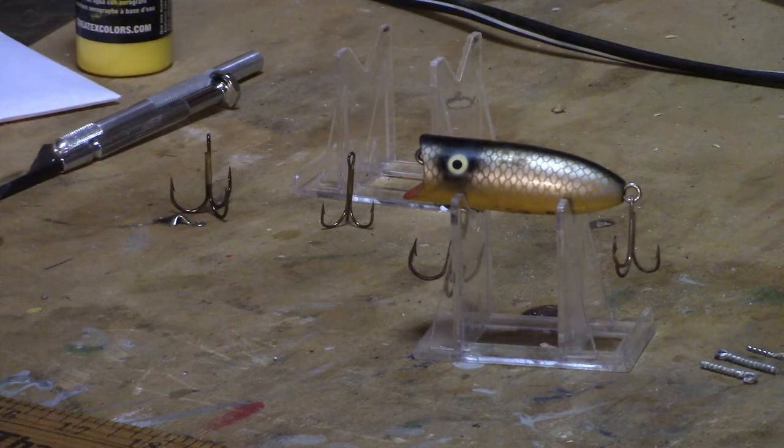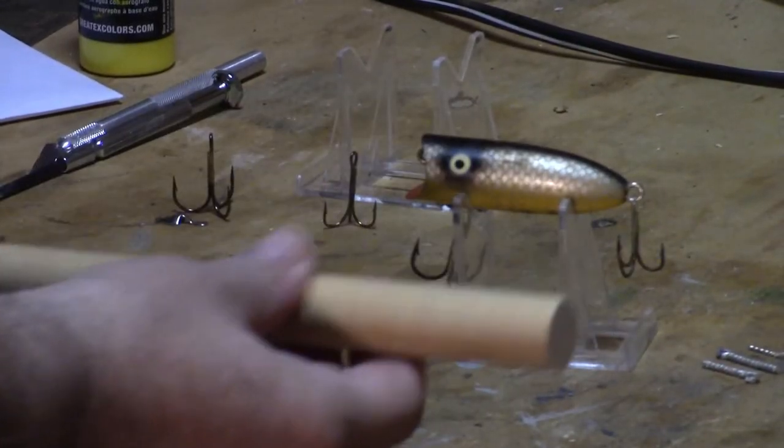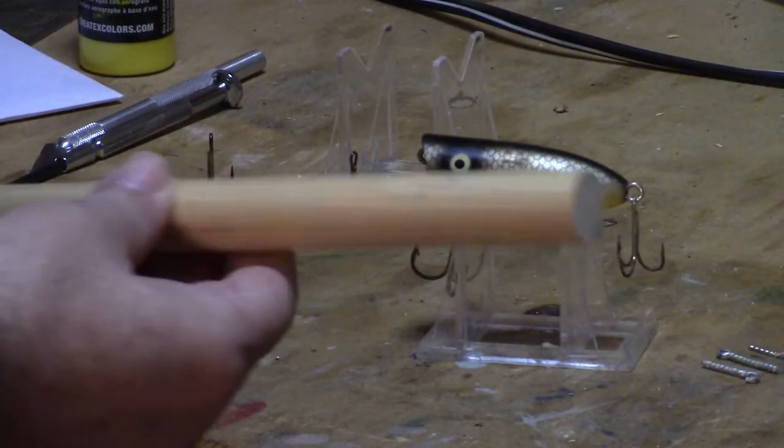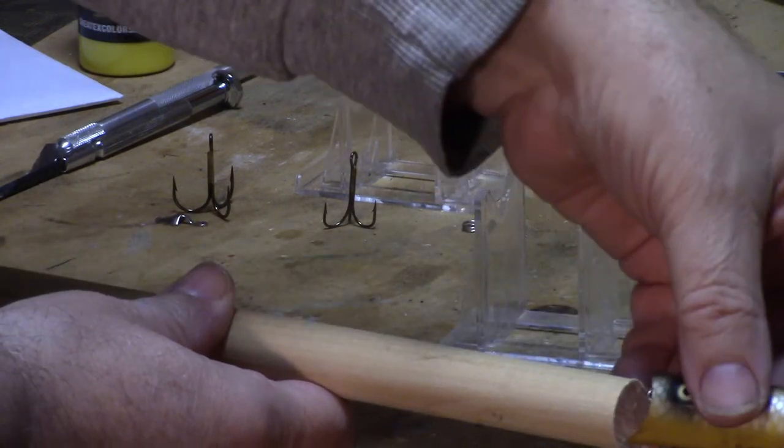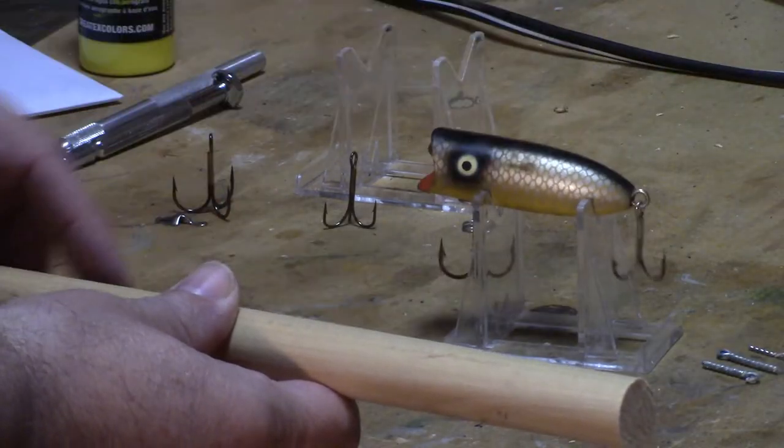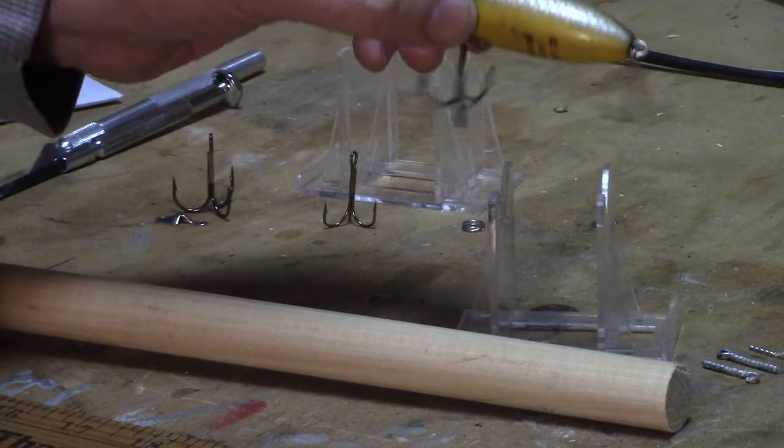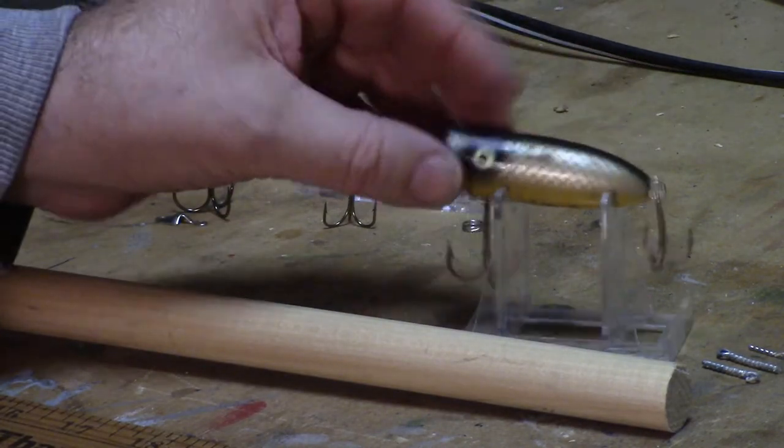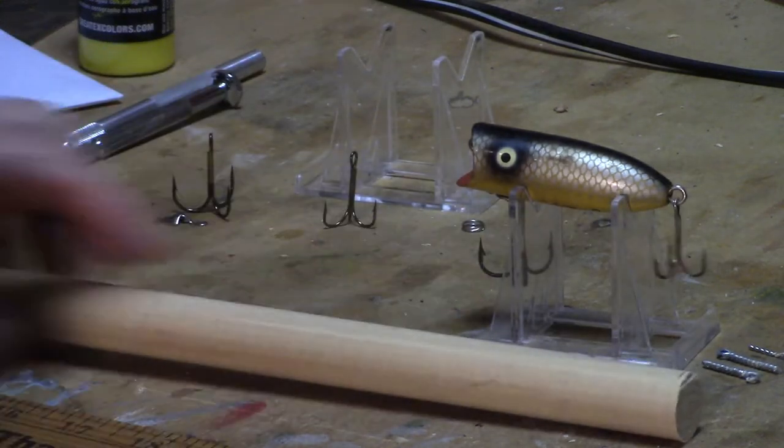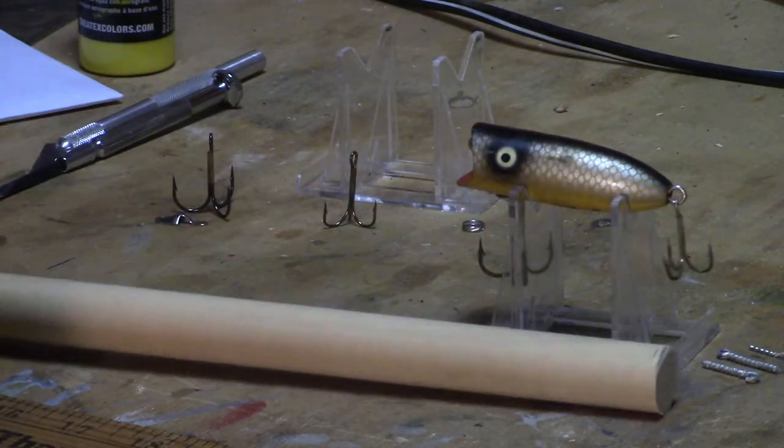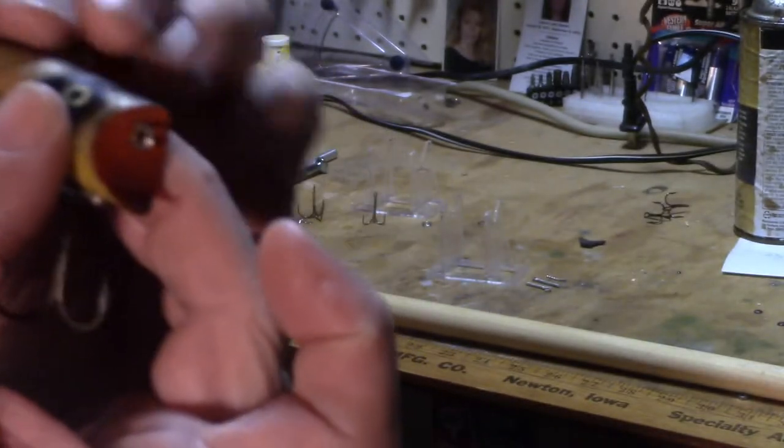I've got a three-quarter inch poplar dowel, and that is just about the same size as this. This guy is about two and three-quarter inches long, so I'm going to cut off a piece that big and then get to work on it.